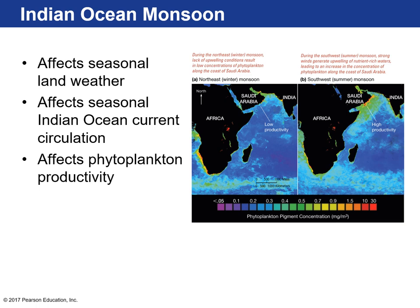Because of this, there are also seasonal changes in the productivity of the ocean itself due to upwelling. During the winter months, there's very low productivity off the coast of Oman because of the direction of the monsoon winds. But when the warm summer winds move moisture over the coast of India, that creates coastal upwelling along the coastline and a lot of productivity as a result.